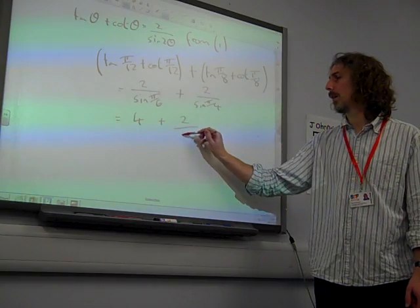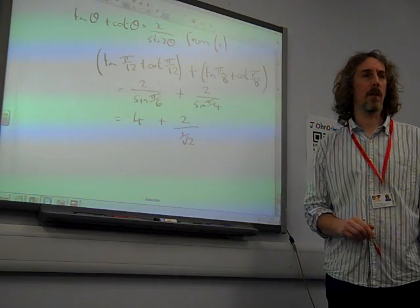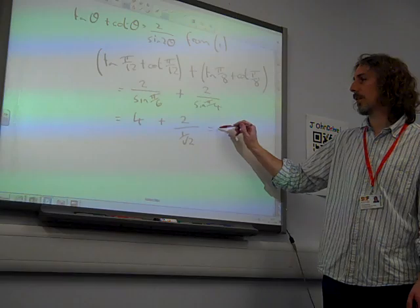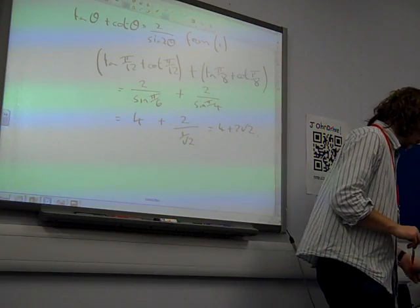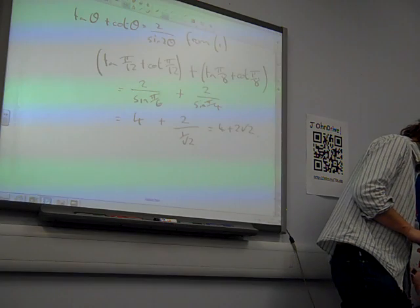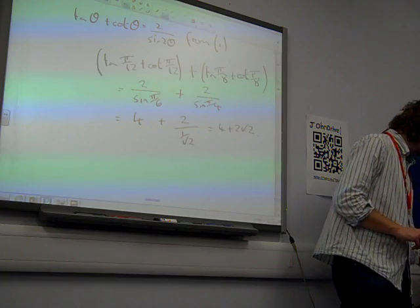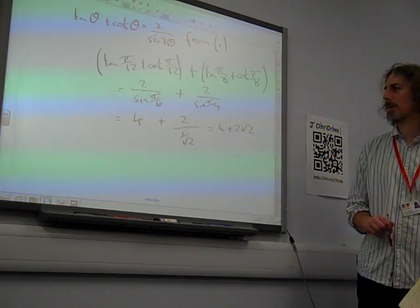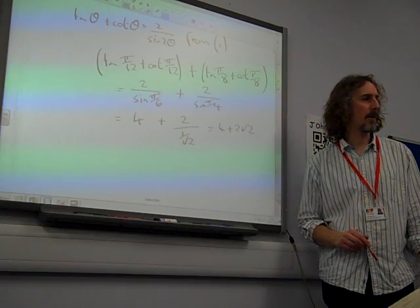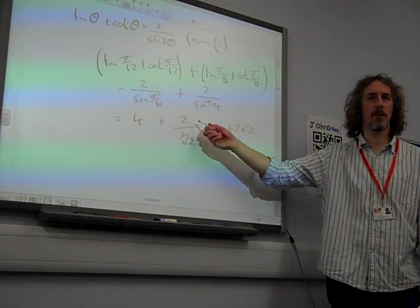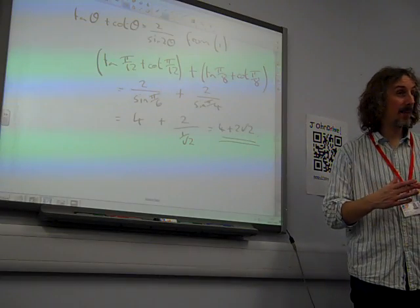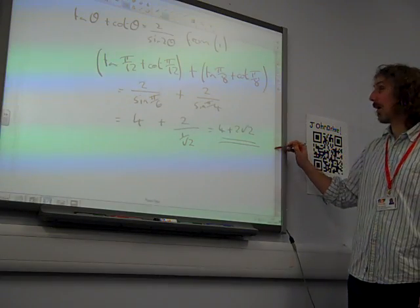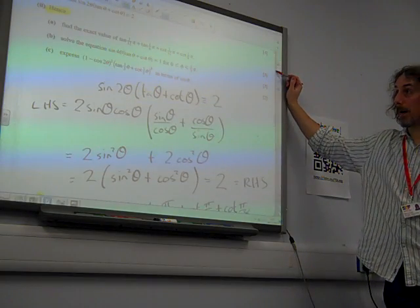So our answer is 4 plus 2 root 2. I think there are other ways of writing that. 4 plus 4 over root 2 was acceptable as well as an answer to that. If you didn't root 2 over 2, you'd see it's the thing of dividing that. There we go, see how we used the hints in that? Part 2, or part B.